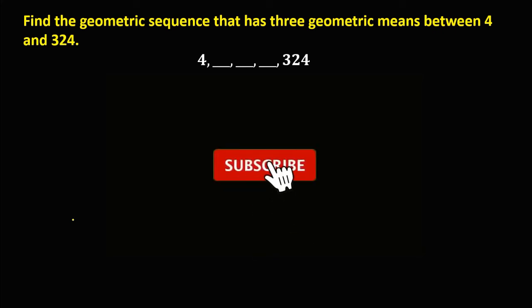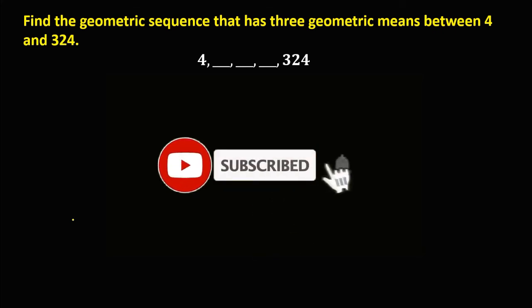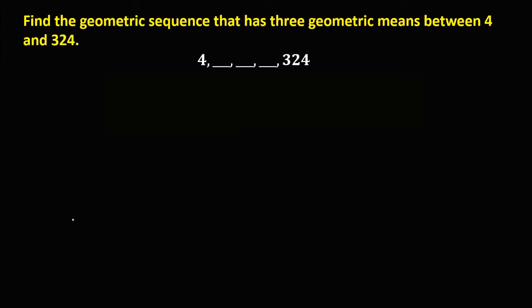So let's have this problem: find the geometric sequence that has 3 geometric means between positive 4 and positive 324.